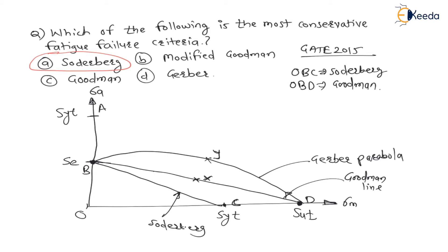Looking more carefully at the regions: the Goodman region is O, B, X, D, while the Gerber region is O, B, Y, D — where X and Y are intermediate points along the respective lines between B and D.